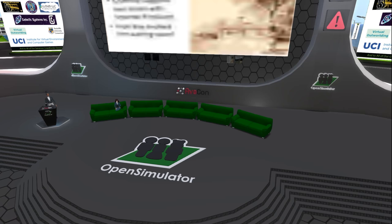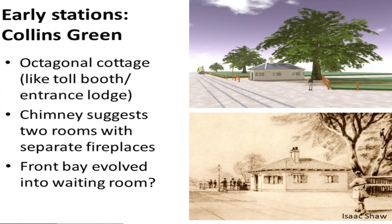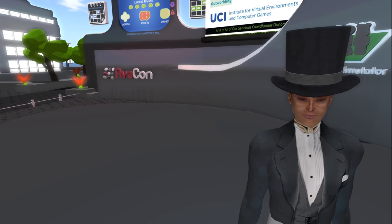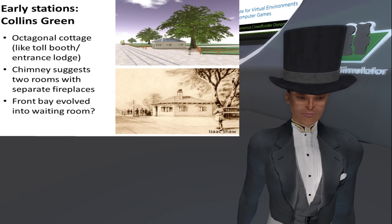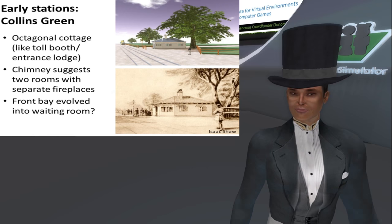Moving on from Rainhill, we now have early stations. There's a station called Collins Green which didn't survive for very long, but what we see there is something we see on maps also in other locations: the early stations evolved from stopping places, basically where there was a level crossing. There was a road that needed to be manned, and in many cases they needed to provide accommodation to the gatekeeper who was responsible for maintaining the safe operation of the railway. This is where people came to get onto and off the trains, because there was a member of staff there who could stop the train.